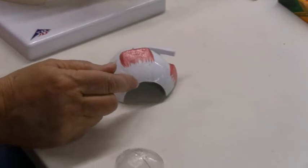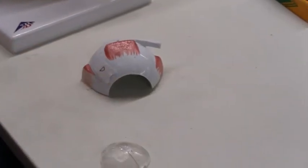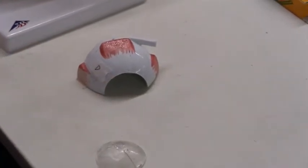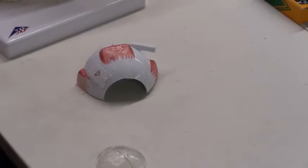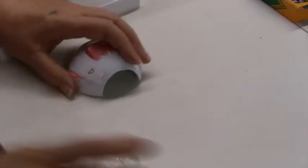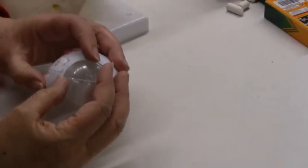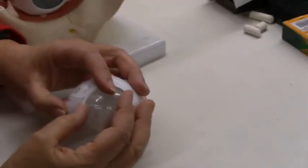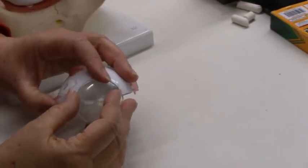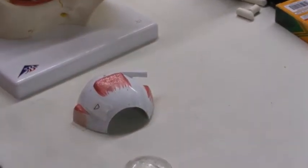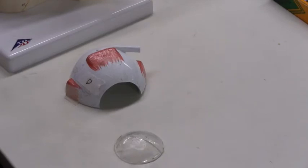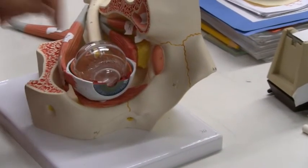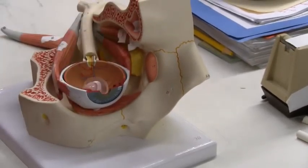After the cornea, we go through the aqueous humor. And then you go through the pupil and you're going to hit the lens, and then the vitreous humor.